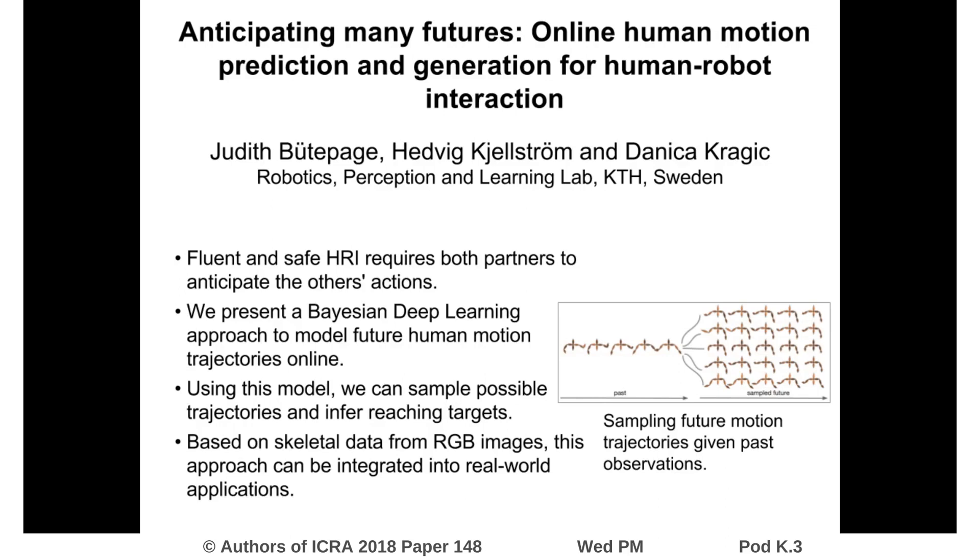We present a Bayesian deep learning approach to model future human movements online. Using this model, we can sample possible trajectories and infer reaching targets. Based on skeletal data collected from RGB images, this approach can be integrated into the decision-making of the robot in real-world applications.